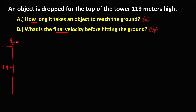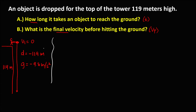If you drop an object, the initial velocity is equal to zero. The displacement, since the object is going down, becomes negative 119 meters. We also have gravity, which is negative 9.8 meters per second squared.